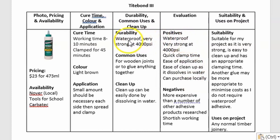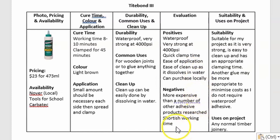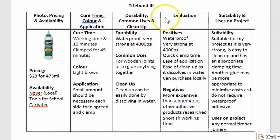For example, as positives: it's waterproof, it's very strong, it has a quick clamp time, ease of application, ease of cleanup, and can be purchased locally. Whereas the negatives are that it's more expensive and has a short-ish working time. The information has come directly from the rest of the table — you've analyzed that information, and that's what makes this evaluation section easy and great.